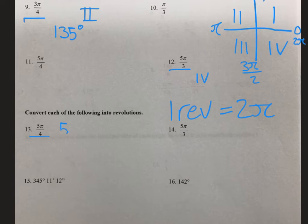Which would be radians. So we have 2π radians for every 1 revolution. Our π's cancel out. That leaves us with 5 fourths times 1 half is equal to 5 eighths revolutions.